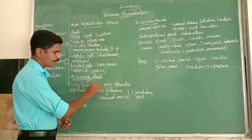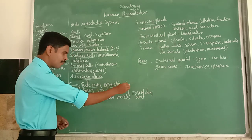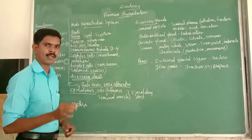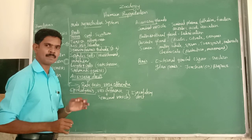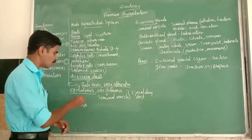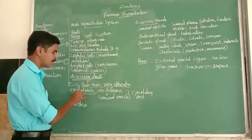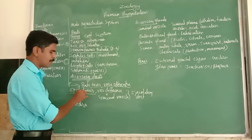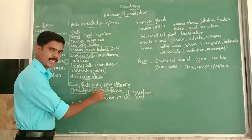From the rete testis, the sperm moves to the vasa efferentia, then into the epididymis. The epididymis is the temporary reservoir or temporary storage place of the sperm. The sperm stays inside the epididymis while getting maturation.